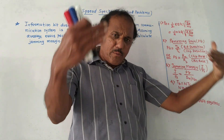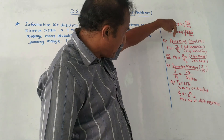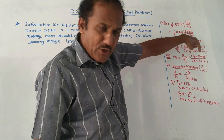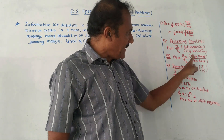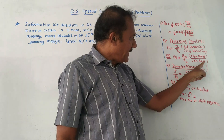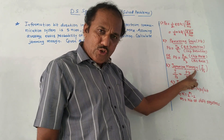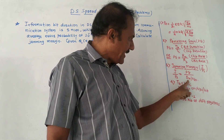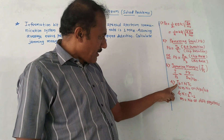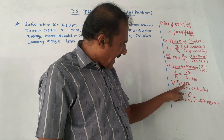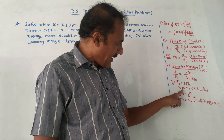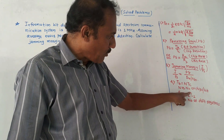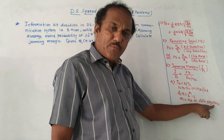Next is processing gain. In the last video I have explained these concepts. Processing gain definition is bit duration TB upon chip duration TC, or it is chip rate RC upon bit rate RB. Next is jamming margin, notation J by PS. The formula is PG, that is processing gain, divided by EB by N0. Then TB is related to TC as N times TC, where N represents number of chips per bit.